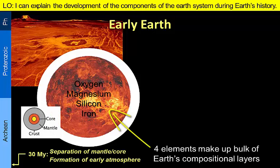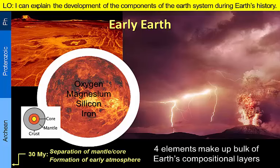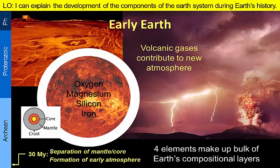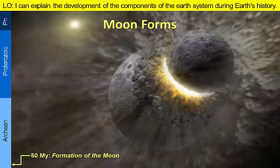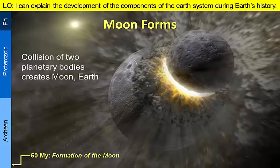Volcanic gases including water vapor from Earth's interior formed a new atmosphere by outgassing processes. The planet's surface was too hot for liquid water, resulting in a constant cycle of precipitation and evaporation. Relatively early on in Earth's history, there was a collision with a smaller Mars-sized planet that blasted out the material that came to form the Moon. This resulted in planet-scale melting and differentiation of the crust.